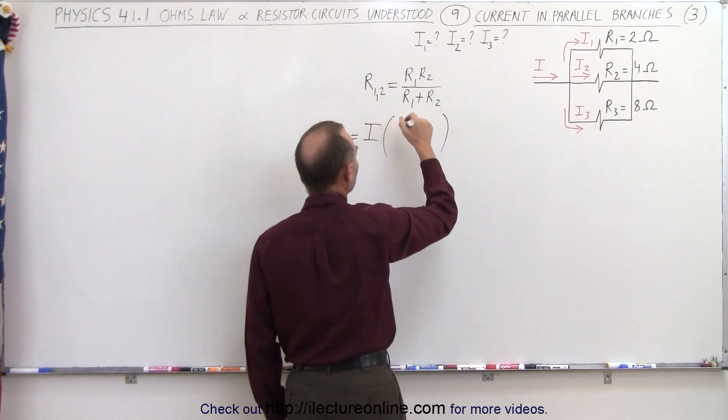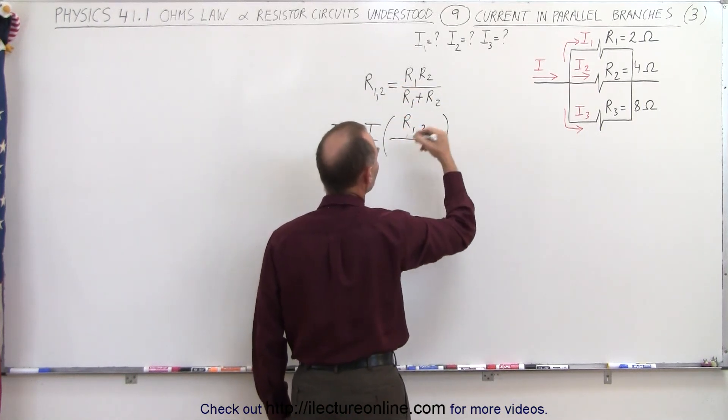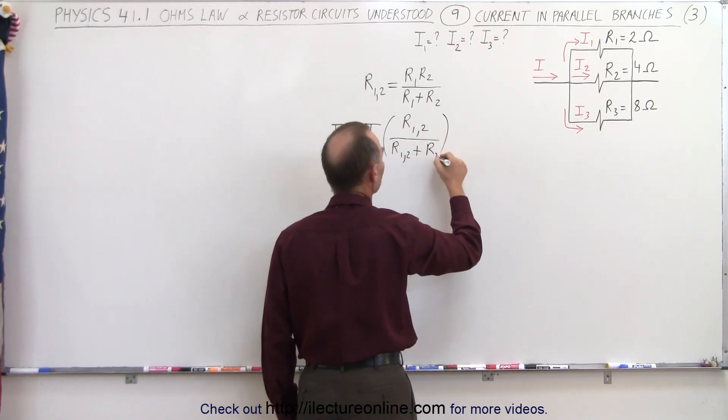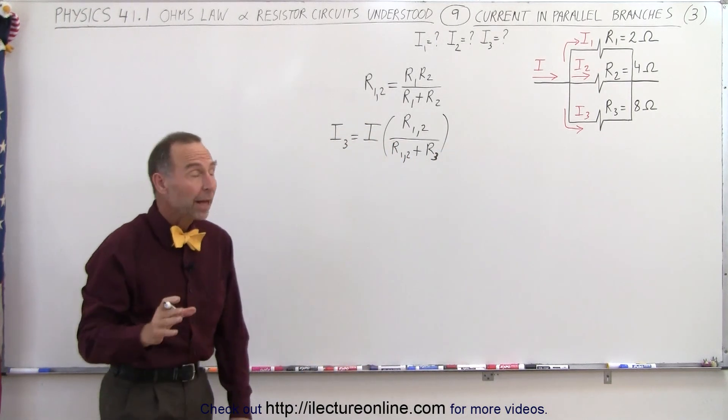times the ratio of the resistance of the other branch, which is R12, divided by the sum R12 plus R3.